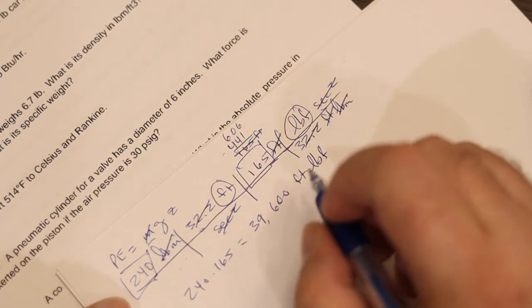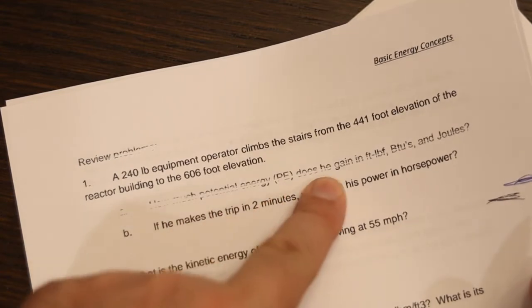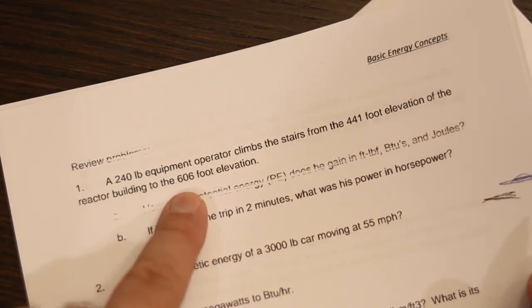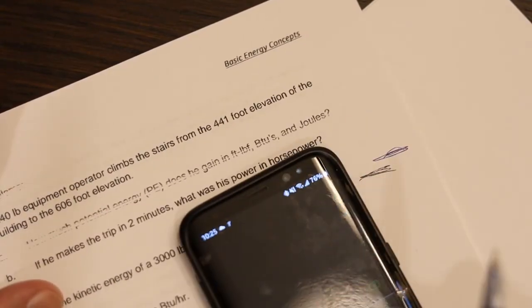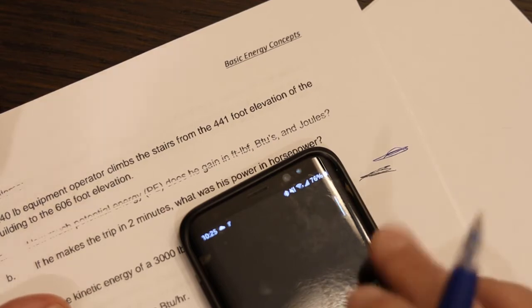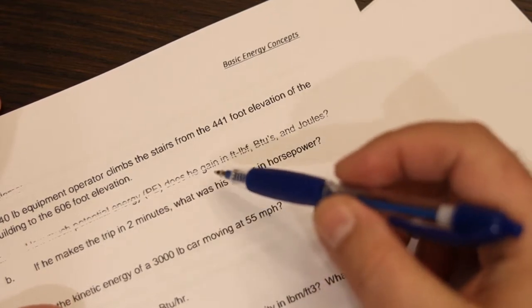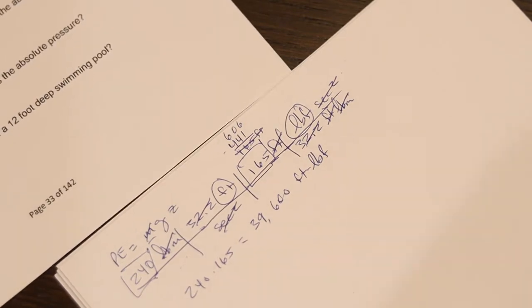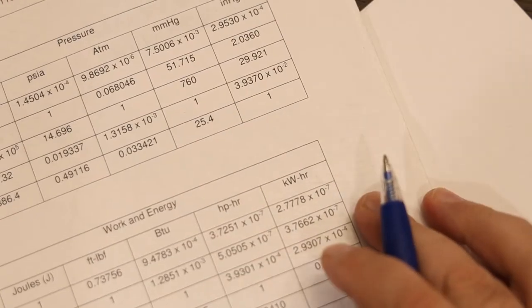So in order to convert the pounds mass, how much matter the guy has to how much he weighs, we have to divide, we have to convert the pounds mass with 32.2 foot pounds mass per pound force second squared. Now let's check our units. Pounds mass cancel out. Second squared cancel out. Foot and this foot cancels out. 32.2 cancels out. I am left with foot pounds force and I'm left with 240 times 165. So 240 times 165. 39,600. And that's foot pounds force. So that's how much potential energy.